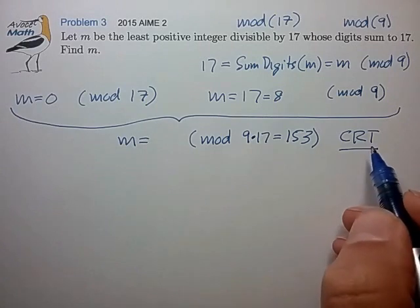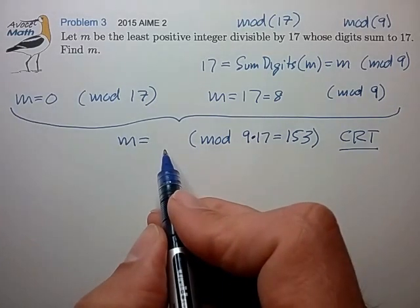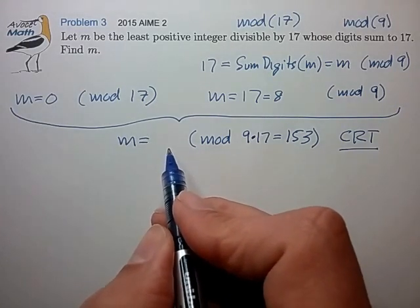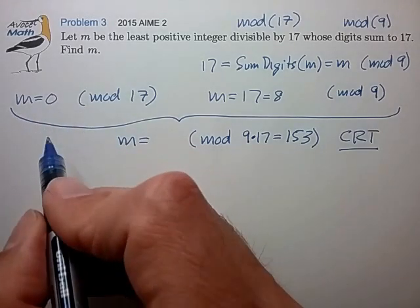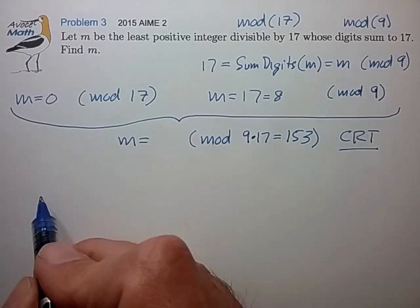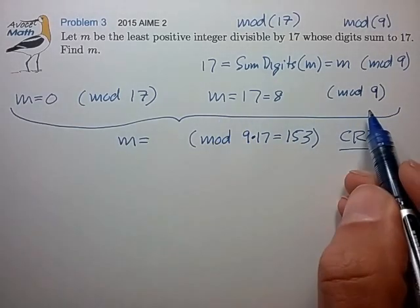The Chinese Remainder Theorem gives us a procedure for finding this number, but that's usually more trouble than it's worth. It's usually easier to take one of the conditions and write down a short list of numbers, and then check those numbers for the second condition.